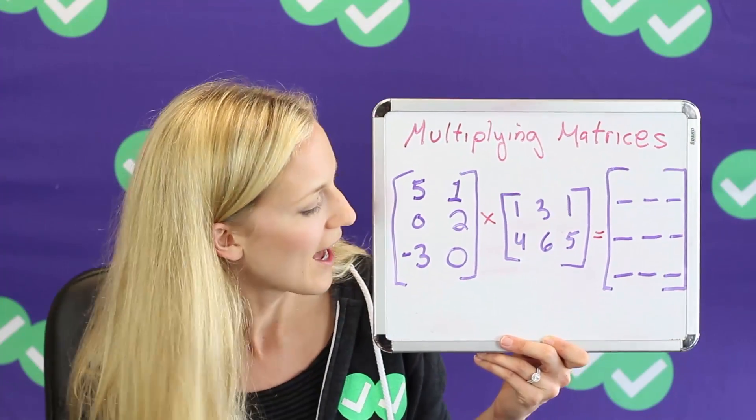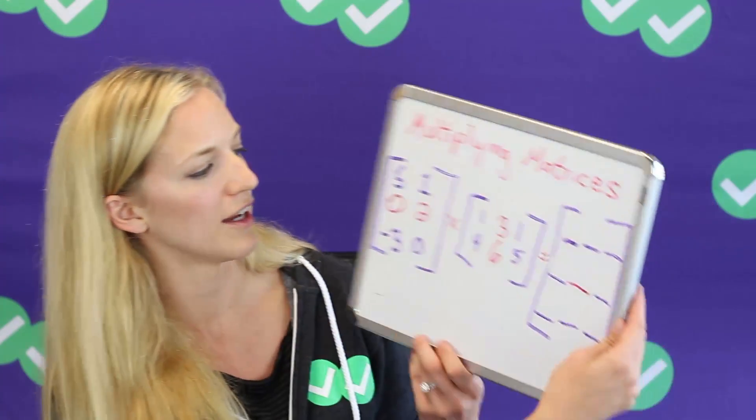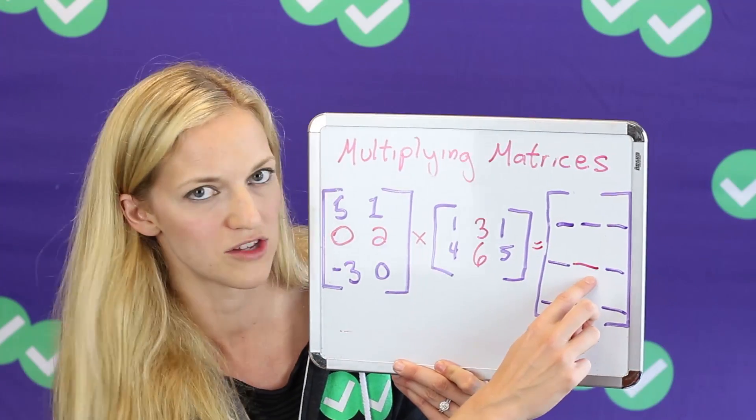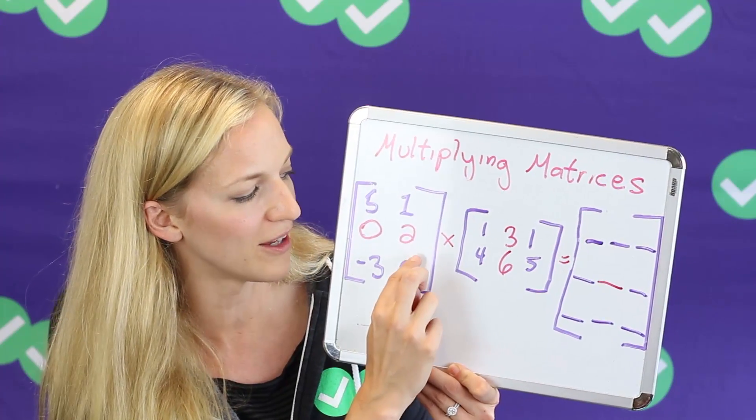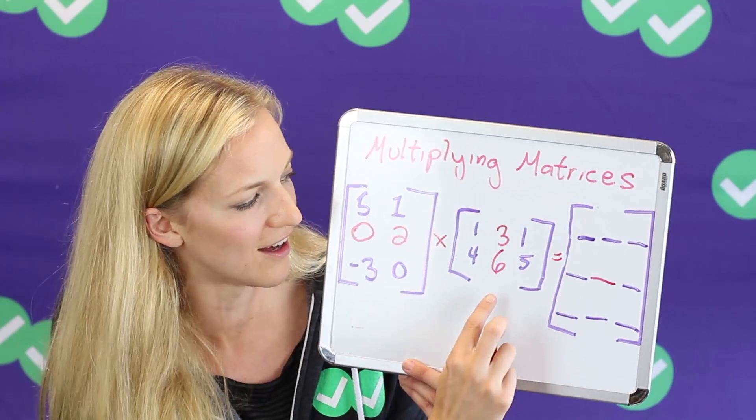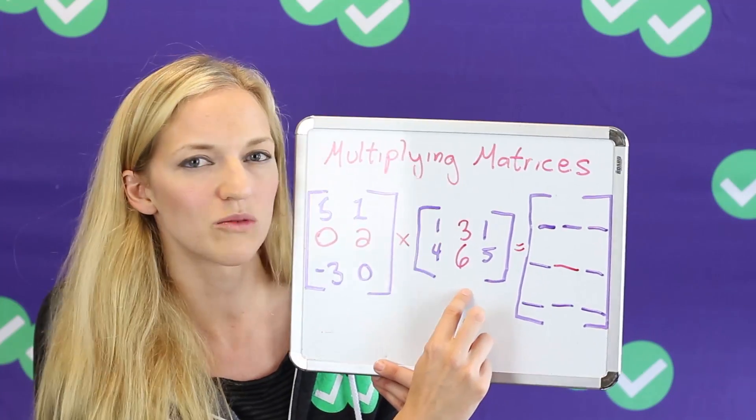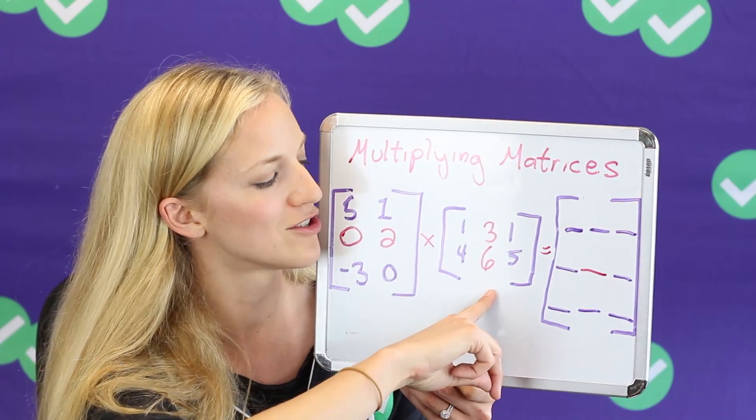All right, so let's talk about how to get some of these answers here. So let's say we want to find the second row, second column number right here. What we're going to do is we're going to use the numbers from the second row in the first matrix and the second column in the second matrix. So I've highlighted those here. And the way that you can remember this, I like to chant this mantra to myself when I'm doing matrices.